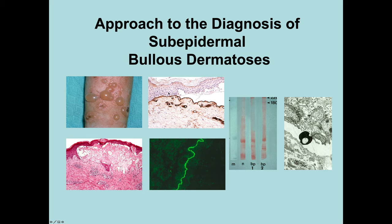In the immunoperoxidase slide, the skin has been stained with an antibody to type 4 collagen, which outlines the basement membrane. We can see that the blister cavity is formed above the basement membrane — in other words, it's within the lamina lucida — and that fits very well with bullous pemphigoid. On the far right, we have electron microscopy, in which the blister cavity develops between the lamina densa, lying along the floor of the blister cavity, and the cell membrane of the keratinocyte.